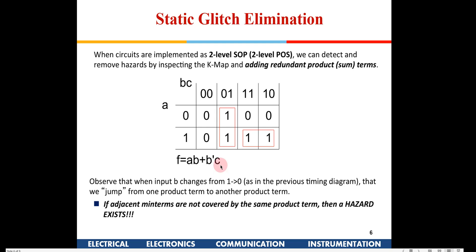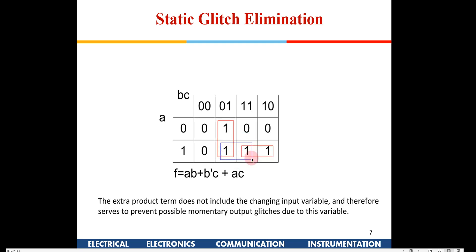For high-frequency applications, glitches can be a problem. If we leave two adjacent ones that are not clubbed together, that will result in a glitch. So we need to make one additional grouping covering those adjacent ones. By seeing the K-map, if there are two adjacent ones not clubbed together, you must add that extra group to eliminate the glitch.